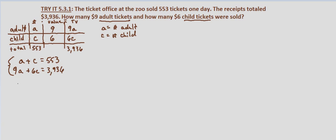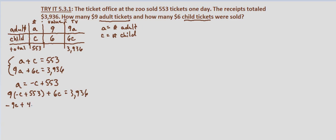If we solve our first equation for a, we get a equals negative c plus 553 by subtracting c from both sides. Now we substitute that into our second equation: nine times (negative c plus 553) plus six c equals 3,936. Distributing the nine we get negative nine c plus 4,977 plus six c equals 3,936.